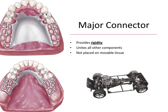The major connector unites all the other components of the framework, like the mesh work, the minor connectors, the rests — all things that we'll talk about in future videos. Also notice that the major connector is not placed on any movable tissue, but instead on bounded tissue like the palate or the lingual aspect of the mandibular alveolar ridge.